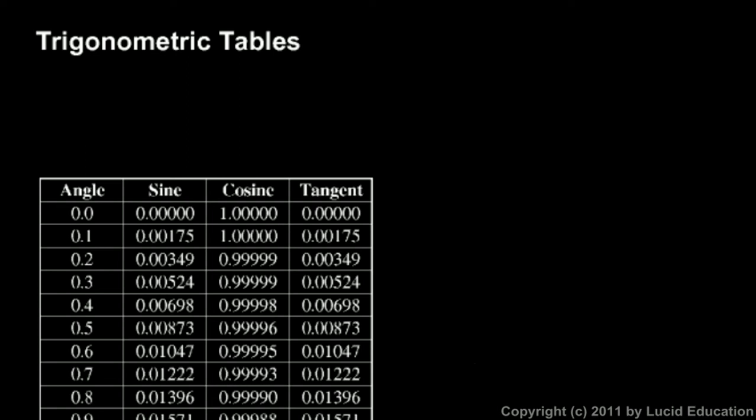Okay, the next thing in the notes are some comments on trigonometric tables, and what you see here is a table of trig values. In the first column, some angles are mentioned, and then in the next columns, the sine, the cosine, and the tangent of each angle.